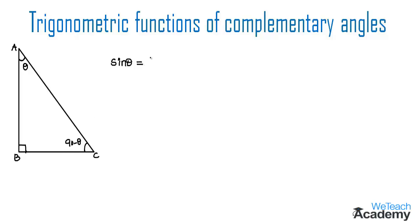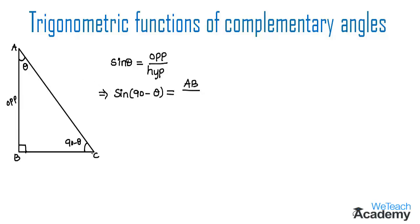equal to opposite side by hypotenuse side. Now let us find the value of sine 90 minus theta. The side opposite to the angle 90 minus theta is AB, so we can write AB divided by the hypotenuse side AC. So we get AB by AC as the value for sine 90 minus theta.